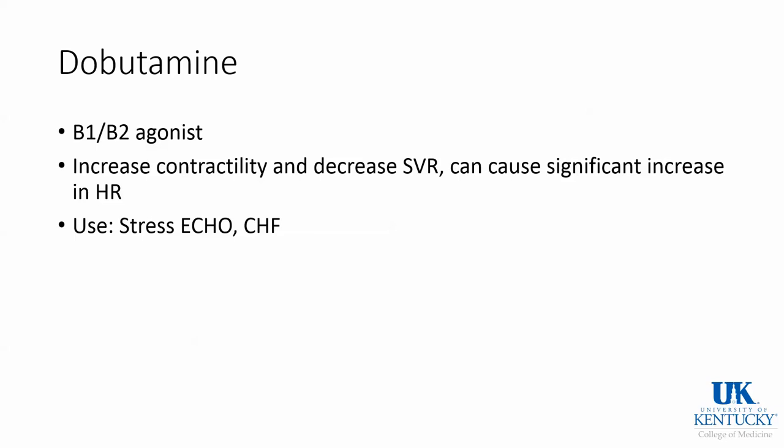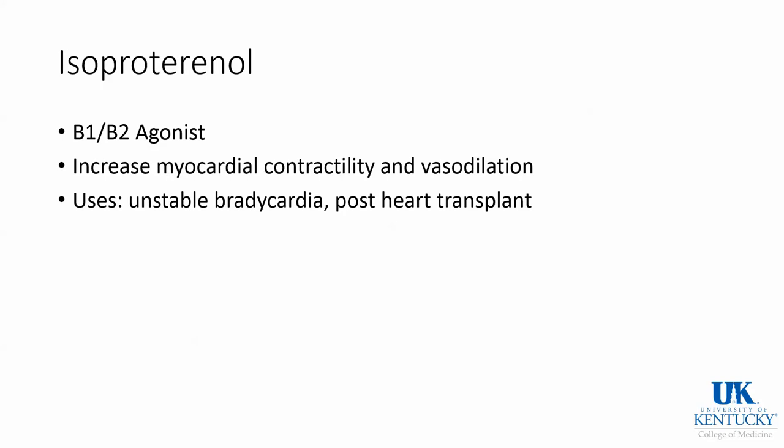Dobutamine has beta-1 and beta-2 agonism properties. The beta-1s will increase your contractility, and with the beta-2s you get some decrease in SVR. These are primarily used for stress echo with patients with heart failure, and we do use these in ORs sometimes for patients after heart transplants or needing help with contractility. Isoproterenol also has beta-1 and beta-2 agonism, very similar to dobutamine. It's not used as frequently in the operating rooms but is indicated after heart transplants and for unstable bradycardia, where you will get a very high heart rate.